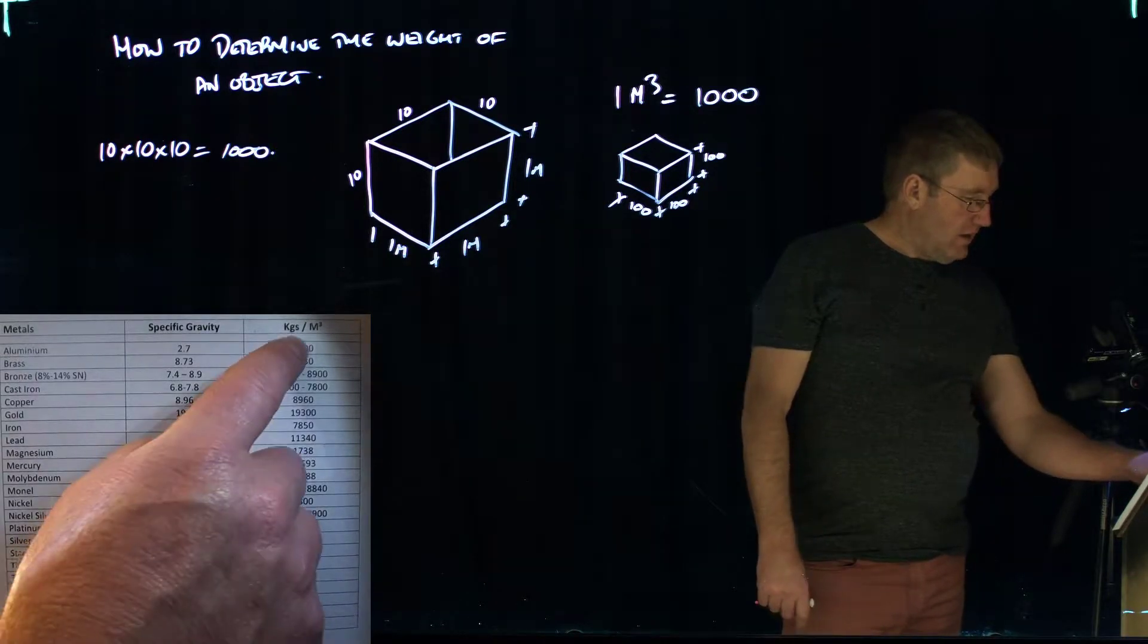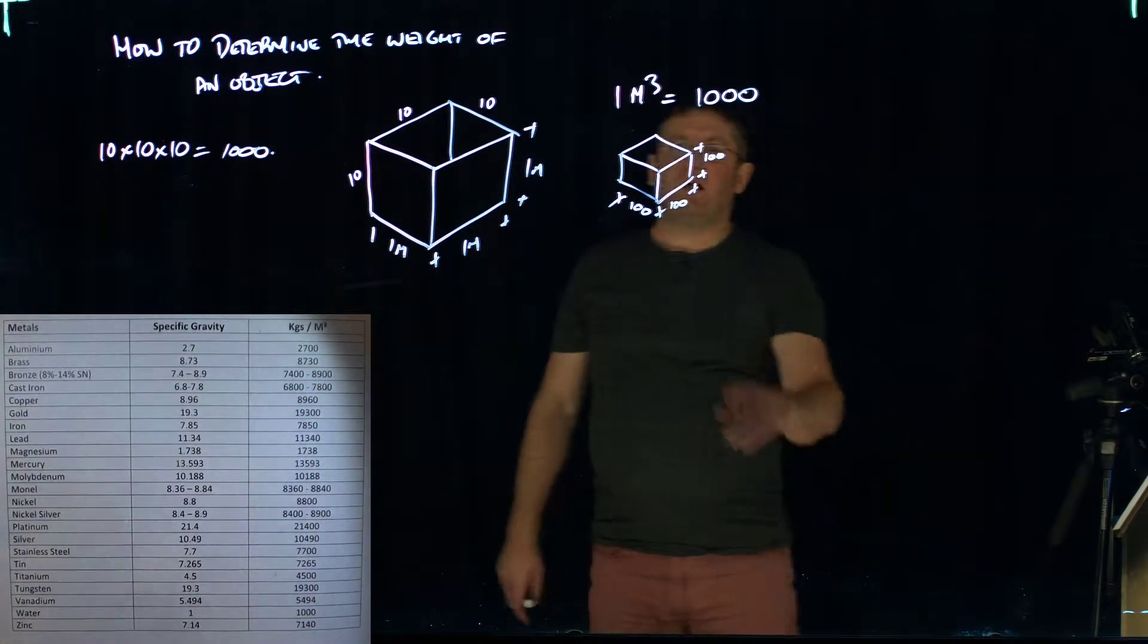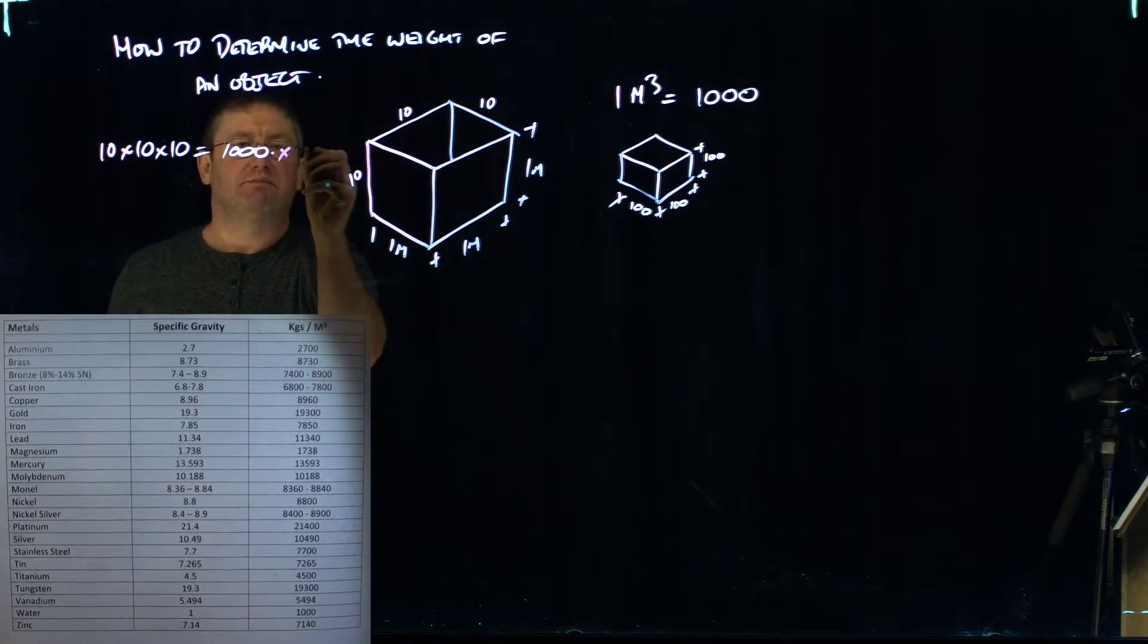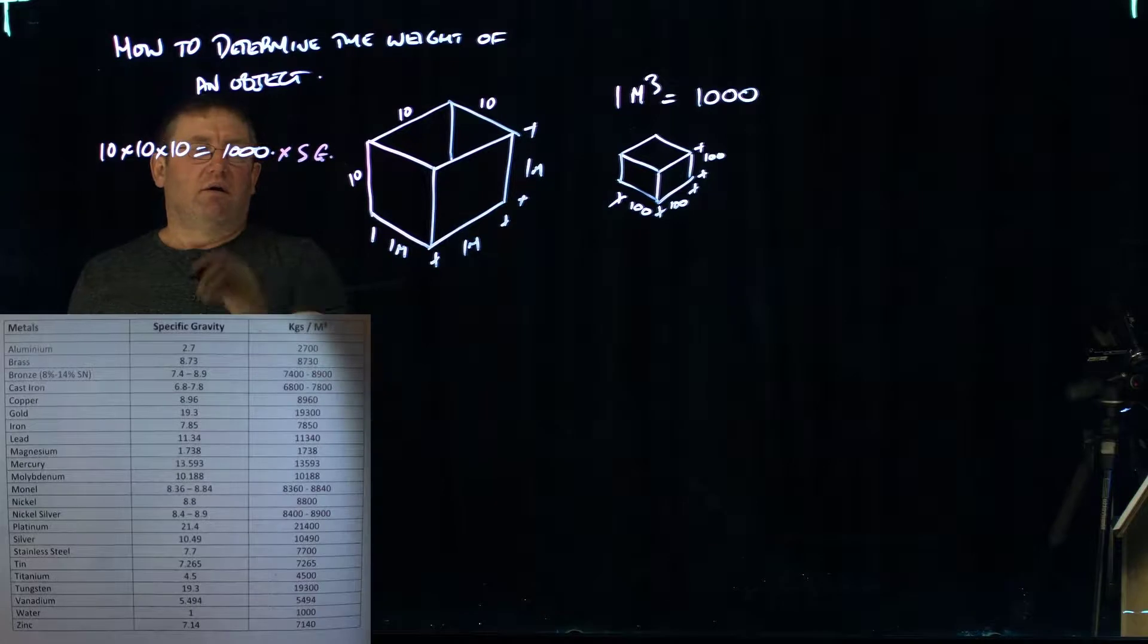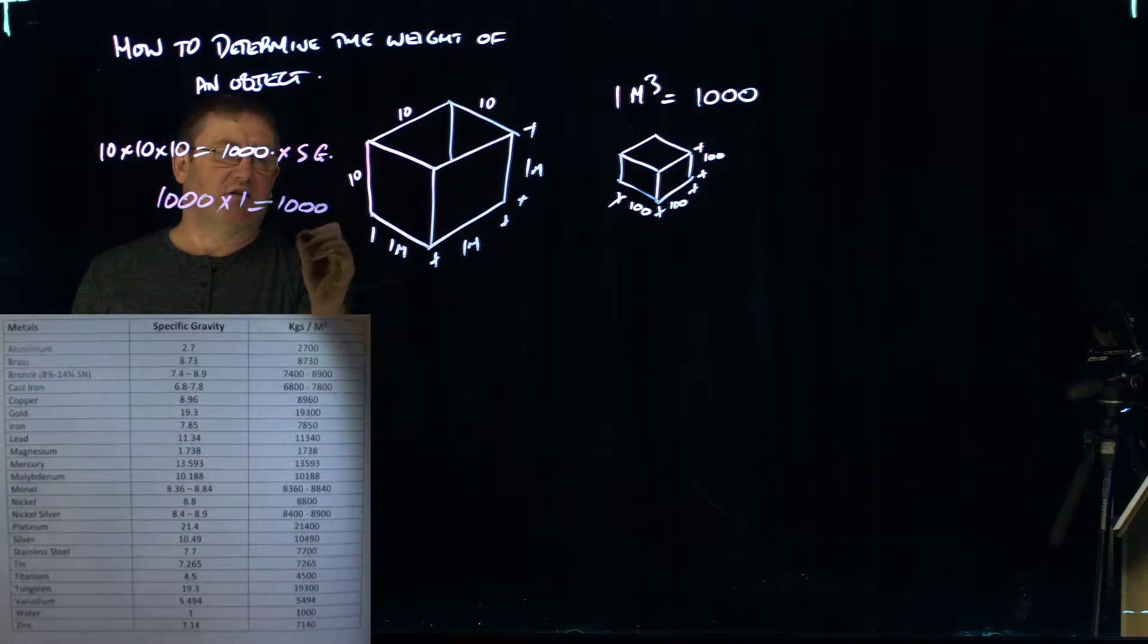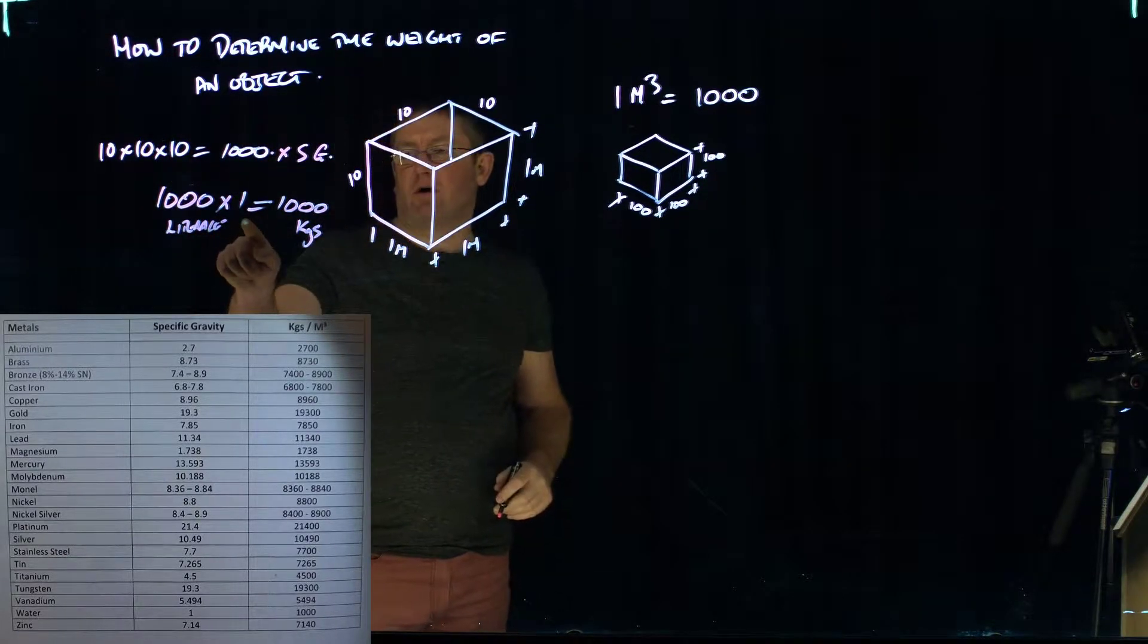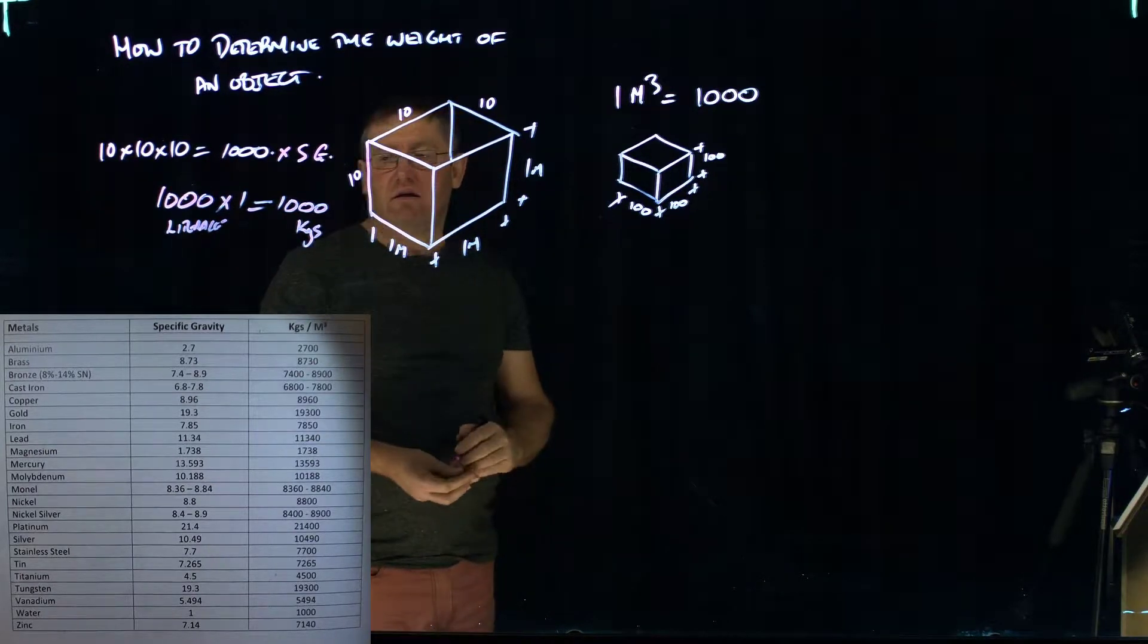Now the specific gravity for water down the bottom here is 1, and there's 1,000 liters in that tank. So kilograms per meter cubed. If I work out that there's 1,000 liters in there, I times it by the specific gravity. So 1,000 times 1 equals 1,000 kilograms.